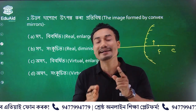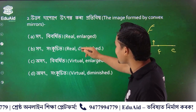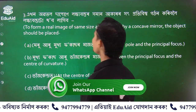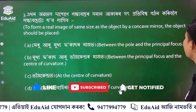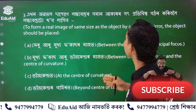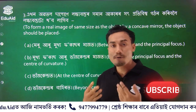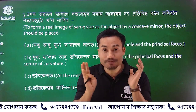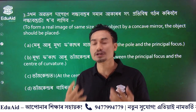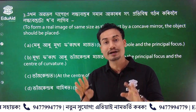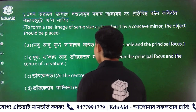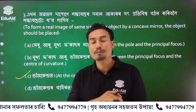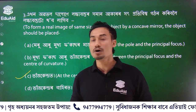The image formed by a convex mirror is virtual and erect. So you can write option number 4. If you want to form a real image of the same size as the object by a concave mirror, the object should be placed at the center of curvature — option number C.